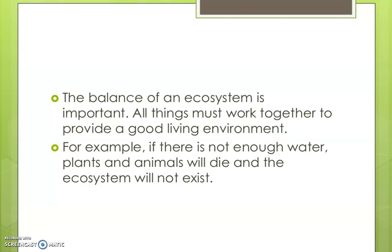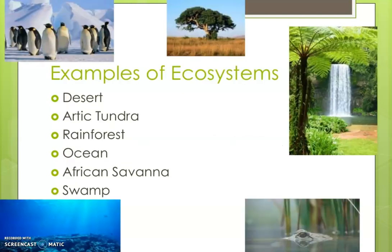All things must work together to provide a good living environment. For example, if there is not enough water, plants and animals will die and the ecosystem will not exist. Here are some examples of ecosystems: desert, Arctic tundra, rainforest, oceans, African savannah, and swamp.